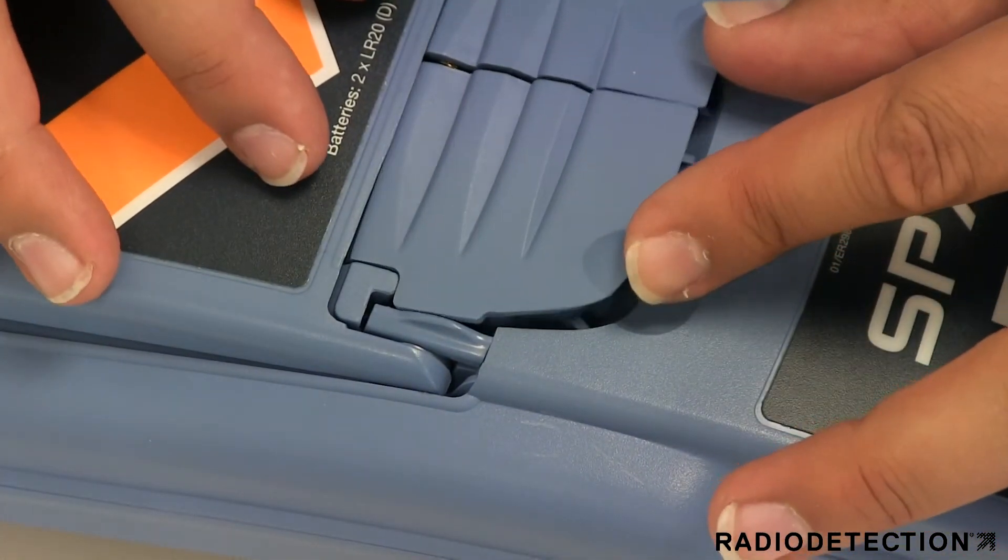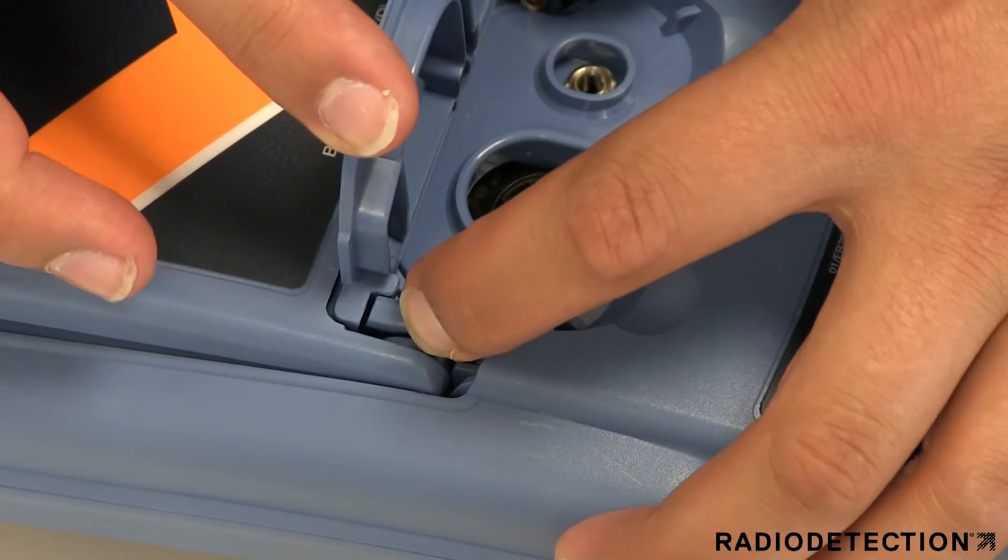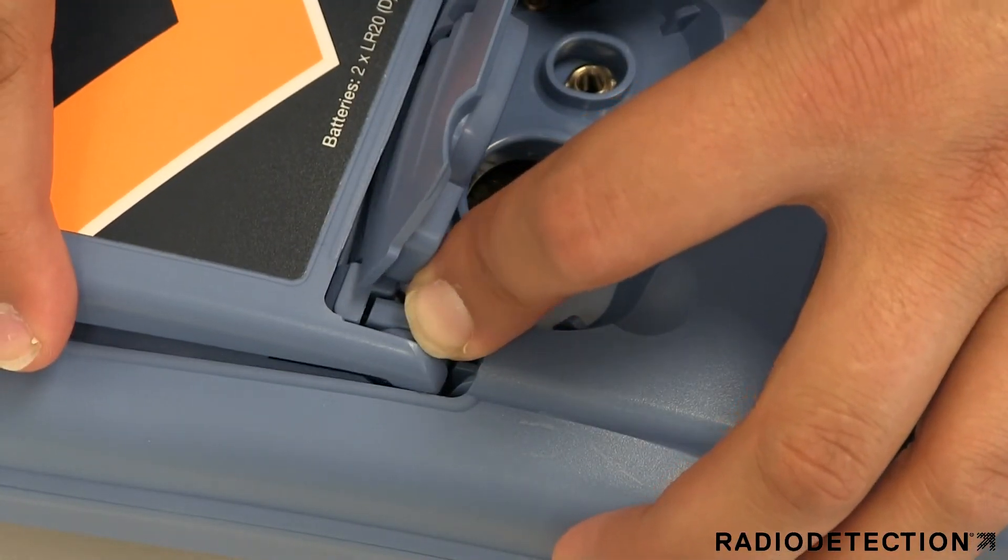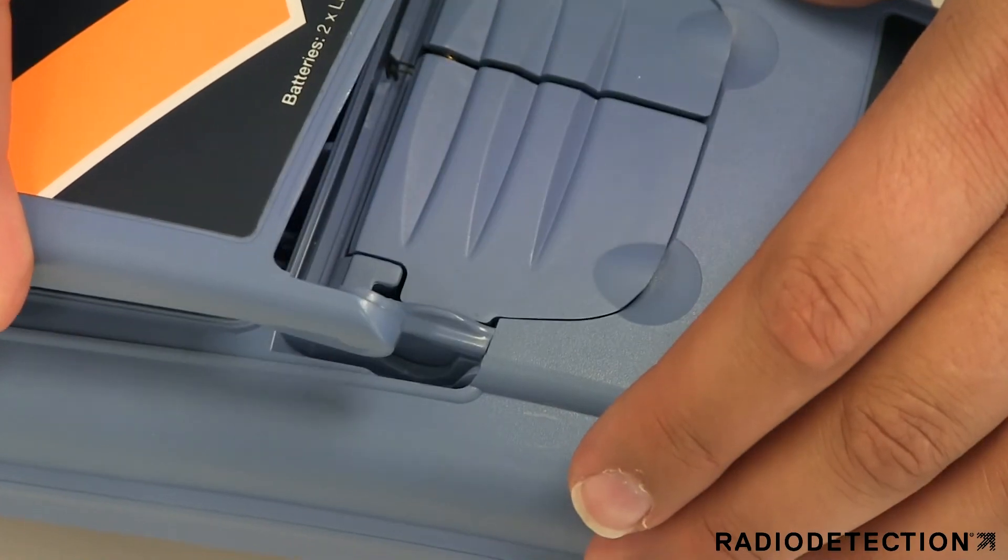Lift the accessory cover slightly and press the battery retaining latch inwards. Repeat on the other side to release the battery pack completely, then lift the battery pack away.